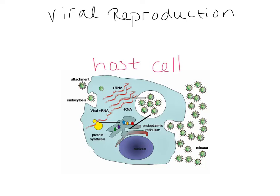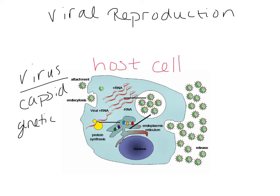Remember in the last video we talked about viruses compared to cells. A virus only consists of a capsid and some kind of genetic material - it can be DNA or RNA, the virus is not picky. A virus may also have an envelope and some surface markers.